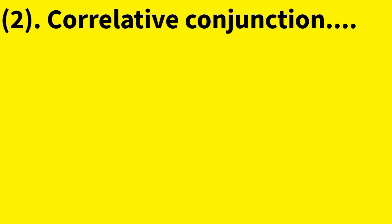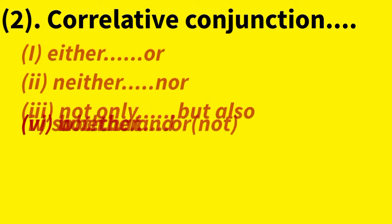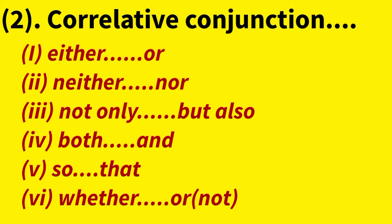The second kind of conjunction is correlative conjunctions. Correlative conjunctions are: first, either...or; second, neither...nor; third, not only...but also; fourth, both...and; fifth, so...that; and sixth, whether...or not.